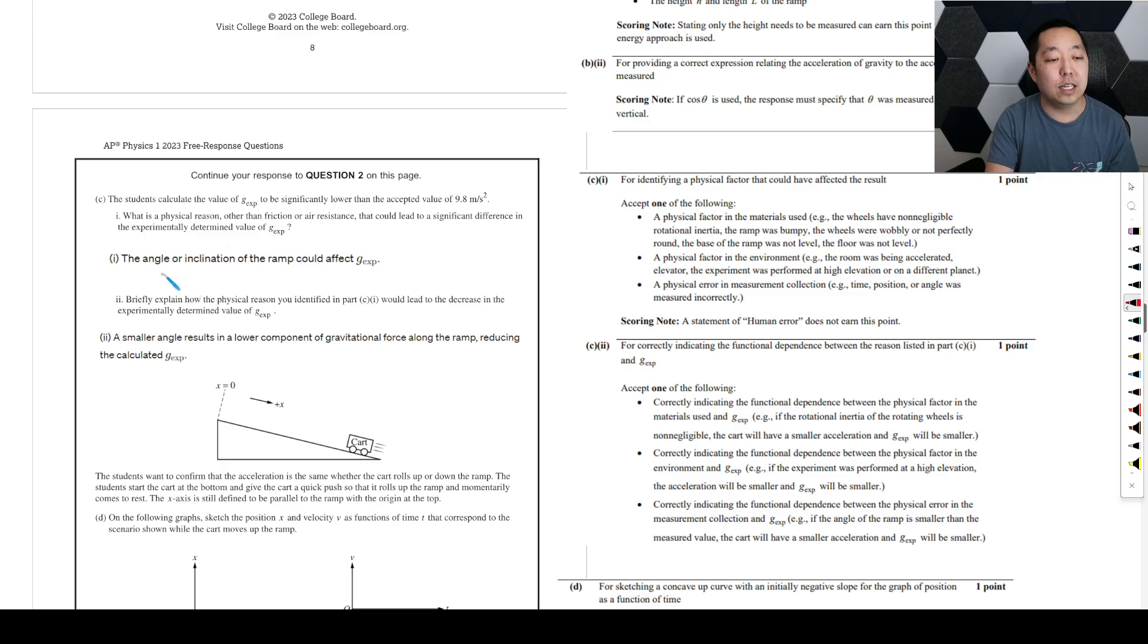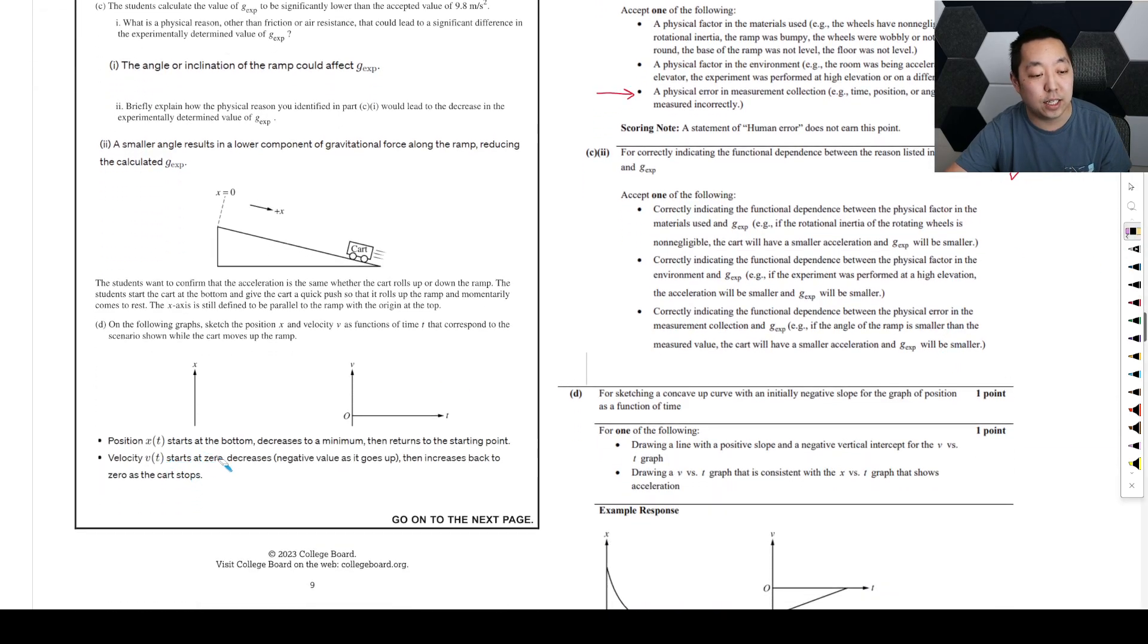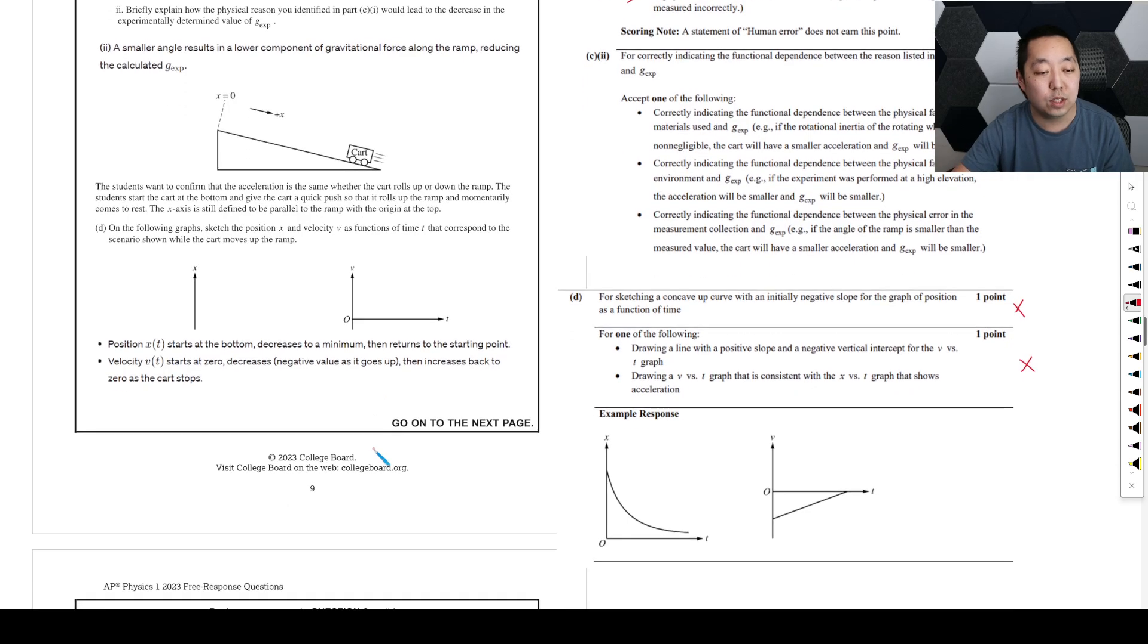So he actually does a great job with this one. So part B, for indicating quantity measured the angle, he says to find measure the angle of the ramp. So got a point for that. For finding a correct relationship between the experimental G and that, that would also be correct. So it did a perfect job on that part here. Students claim that this is wrong. He could say the angle or inclination of the ramp. He ought to have said a physical error in the measurement. That's what he probably would say. I'm going to go and give him the point because that is a physical factor. I think he was just saying that like maybe the angle was wrong or a little bit different in some ways. So that I think is sufficient. I think it's specific enough on that point. And he did a correct conclusion as to how the physical reason would lead to a decrease. A smaller angle results in a lower component of gravitational force along the ramp, reducing it. So I thought he did a good job with that one as well.